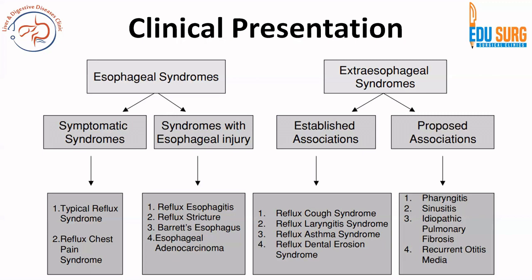Initial GERD will present with symptomatic syndromes, and based on the natural history of disease, syndromes with esophageal injury can develop. Many patients also present with extraesophageal syndromes such as reflux cough syndrome, laryngitis with hoarseness of voice, asthma, and dental erosion — these are established associations with GERD. Other associations include recurrent otitis media, idiopathic pulmonary fibrosis, and sinusitis.